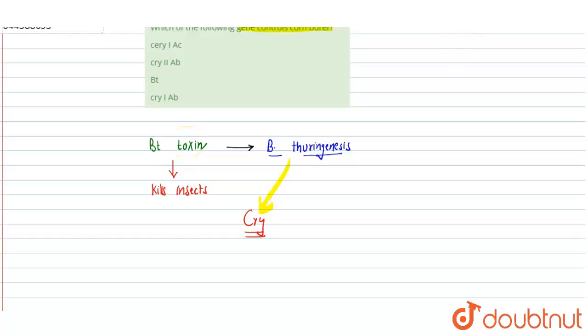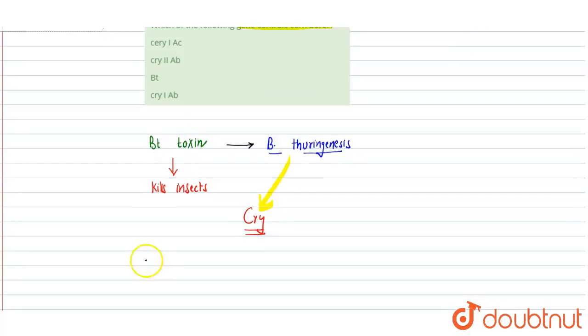There are a few: one is cry1ac, and cry2ab. These two cry genes control the cotton bollworms.